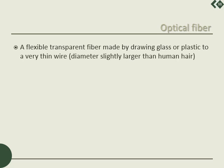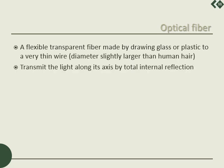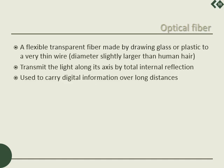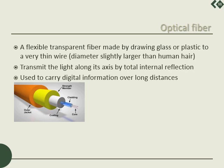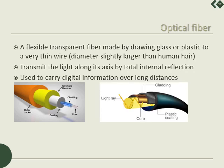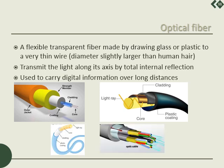Optical fiber is a flexible transparent fiber made by drawing glass or plastic to a very thin wire — its diameter is in the order of human hair, slightly larger. Optical fibers transmit light along their axis by total internal reflection and are used to carry digital information over long distances. Optical fibers are laid intercontinentally across oceans. The cross section shows a core made of very thin glass, properly protected, and a single optical fiber cable consists of several such optical fibers bundled together.